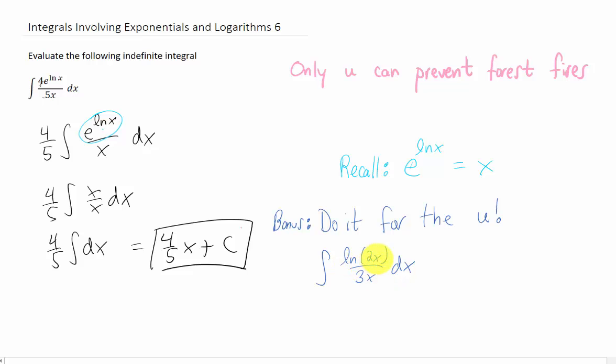Let's say we have the natural log of 2x divided by 3x. You'll notice that if we choose our u to be the natural log of 2x, that our du is going to be 1 over 2x, and then the chain rule says we have to multiply that by a 2, so our du is just 1 over x dx.